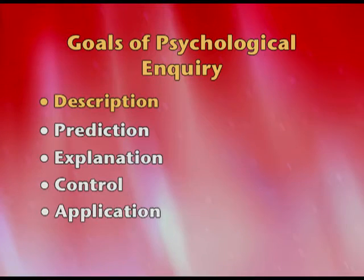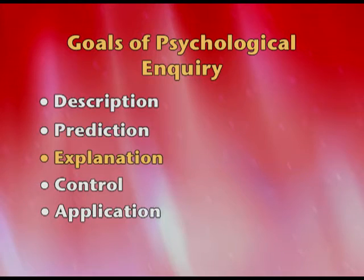Let us take up a problem. A researcher wants to study the impact of study time on the performance of a child. The researcher has to identify the basic meaning of study time and performance — that is description. The researcher is going to forecast, that is predict, what is the impact of study time on performance. Third is explanation, that is causal factors — the researcher will understand what factor leads to better study time and therefore better performance.